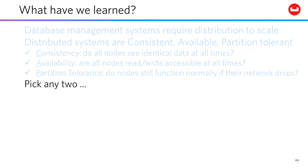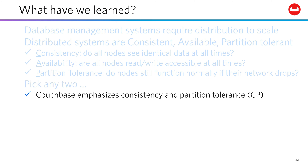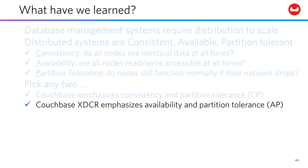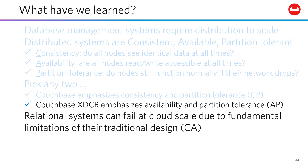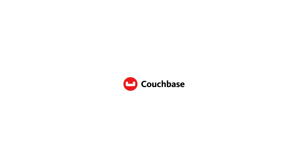You get to pick any two. Couchbase emphasizes consistency and partition tolerance. Or, if you use cross-data center replication, then it falls into the AP category — availability and partition tolerance. Both architectures are available to you with Couchbase. Relational systems, though, can fail at cloud scale due to fundamental limitations of their old design. Couchbase — we've got you covered, and we've got a lot more to come. Stick around.